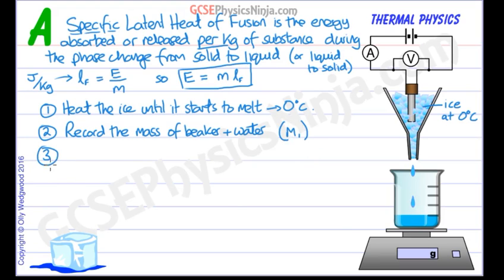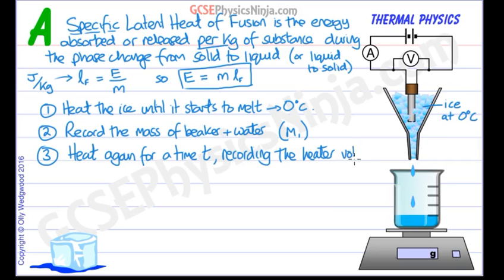Part three is that we turn on the heat again. So we heat again for a time T. It depends what kind of apparatus you've got and how powerful the heater is. It may be that you only need a couple of minutes to collect enough water to have a significant measurement, a significant change in mass. So we'll heat again for a time T and at the same time we'll be recording the heater voltage, the potential difference and current.